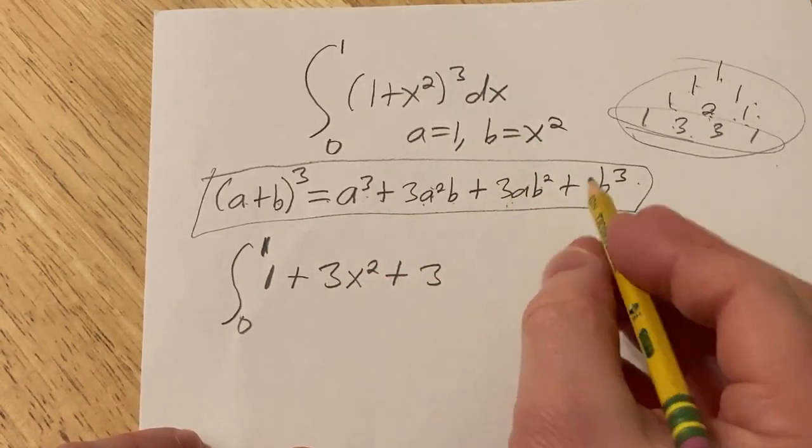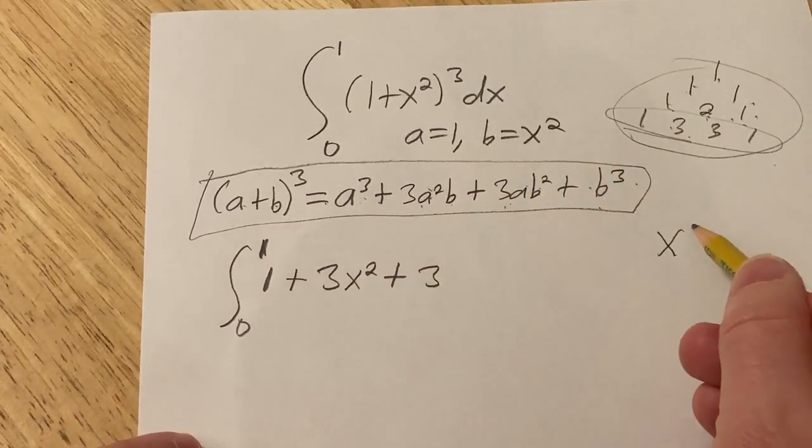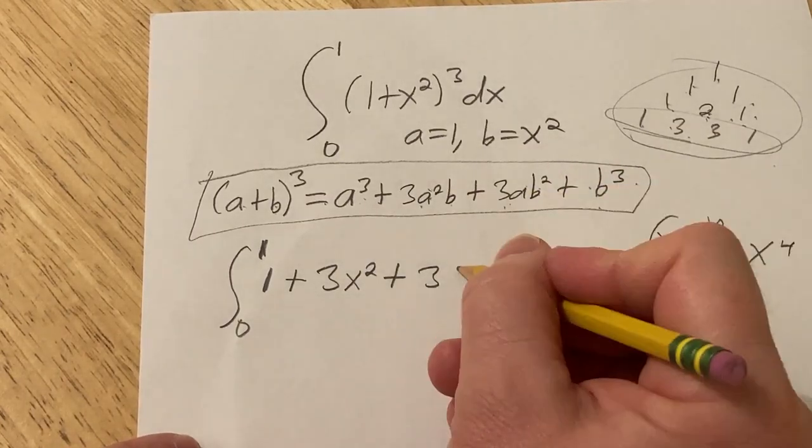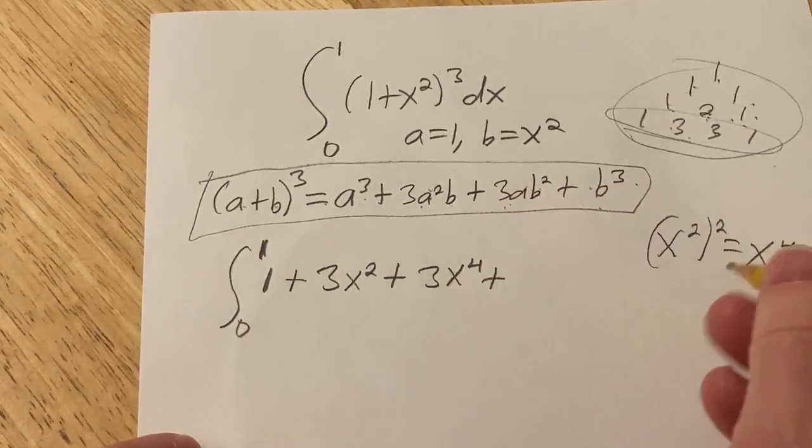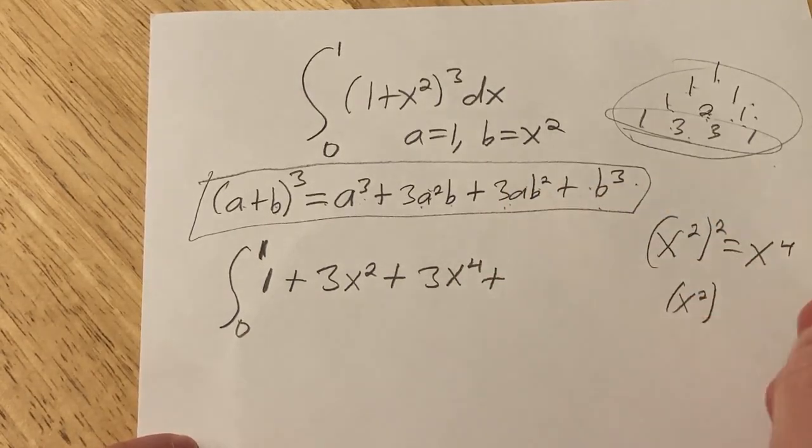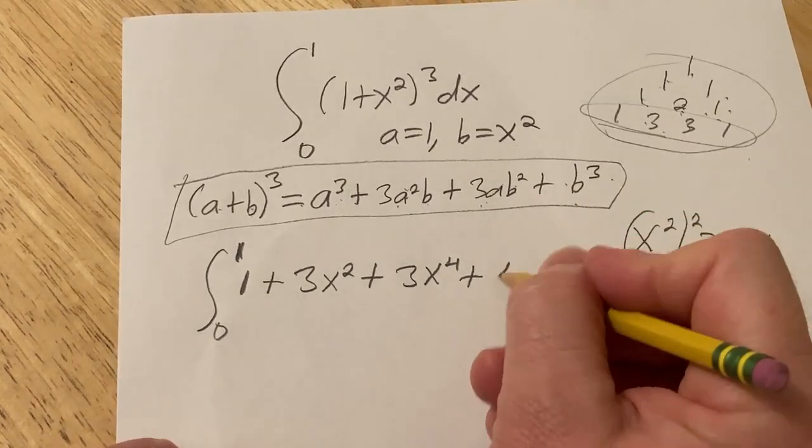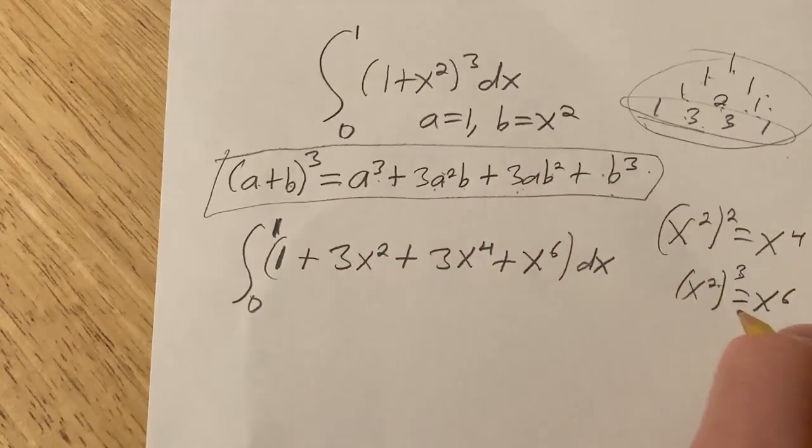a is 1, so no problems. b squared is x squared squared. So when you square x squared, you're going to get x to the fourth power. And then b cubed is going to be x squared cubed. So 3 times 2 is 6. So x to the 6. This is going to be lots of fun to add up, right?